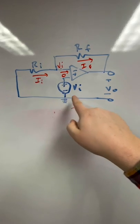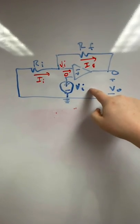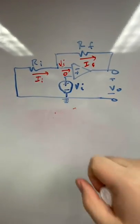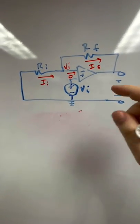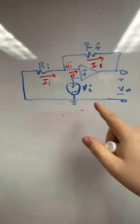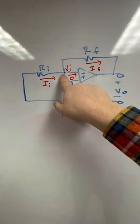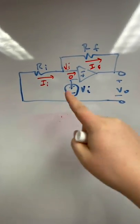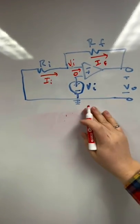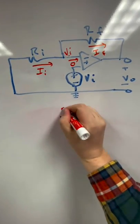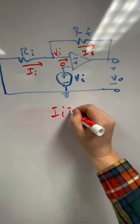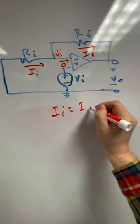Today, I'm going to tell you about non-inverting op-amp configurations. In the non-inverting configuration, I've got my input voltage connected to the non-inverting or plus terminal. The zero differential input voltage tells me that the voltage at this node is Vi. There's zero input current, and so Ii is equal to If.